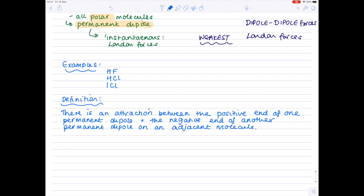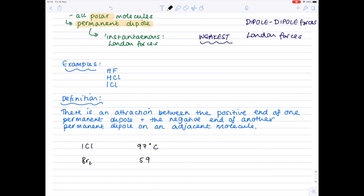And just to show that these dipole-dipole forces are stronger when compared with London forces, let's take two molecules. Firstly, iodine chloride, and secondly, a bromine molecule. The boiling points are 97 degrees for iodine chloride and only 59 degrees for a bromine molecule.